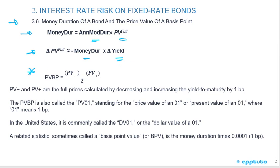Moving to the price value of a basis point: the calculation is the price of the bond when rates decrease minus the price of the bond when rates increase, divided by 2. In the numerator, we're looking at full prices calculated by decreasing and increasing the yield to maturity by one basis point only. So we're looking at the change in price from the change in one basis point.